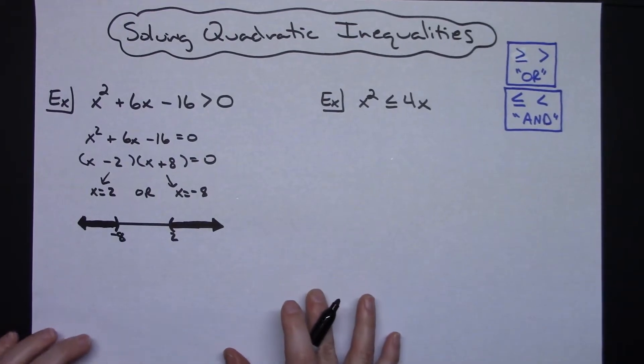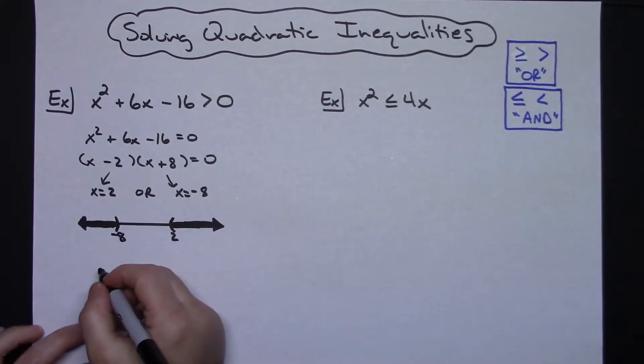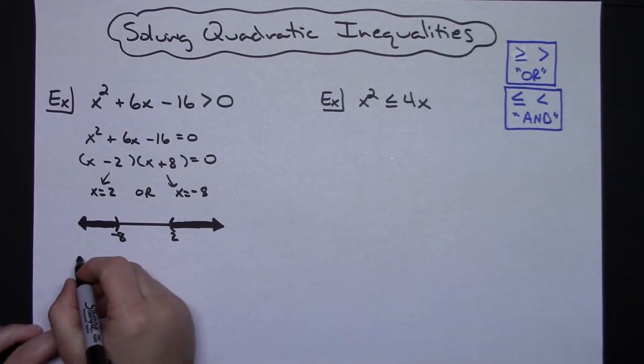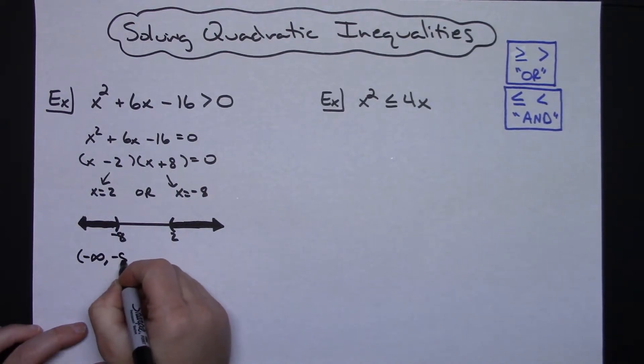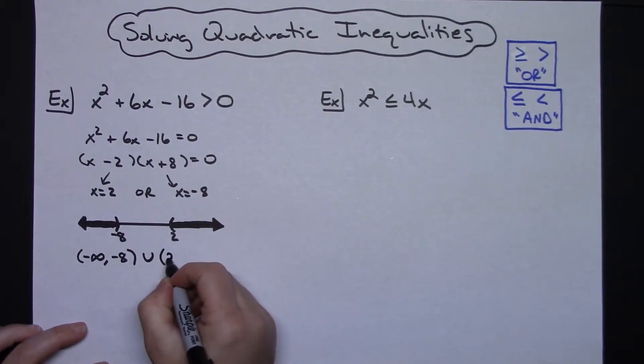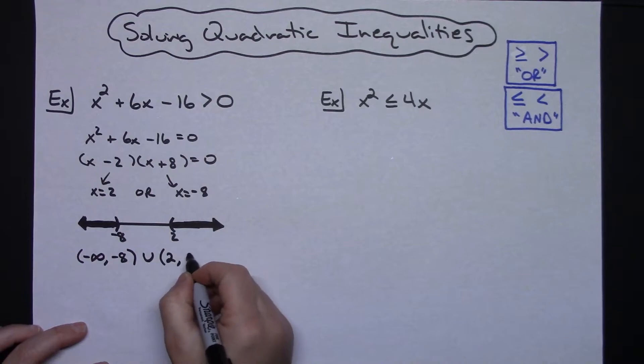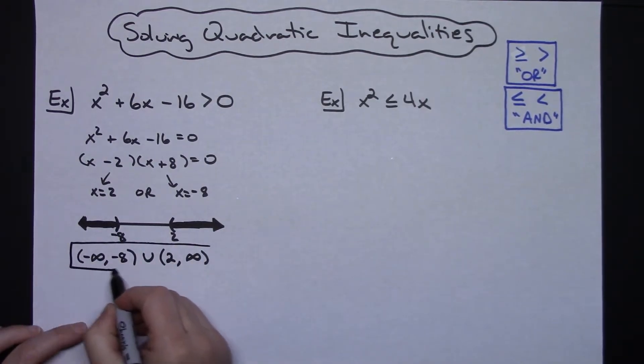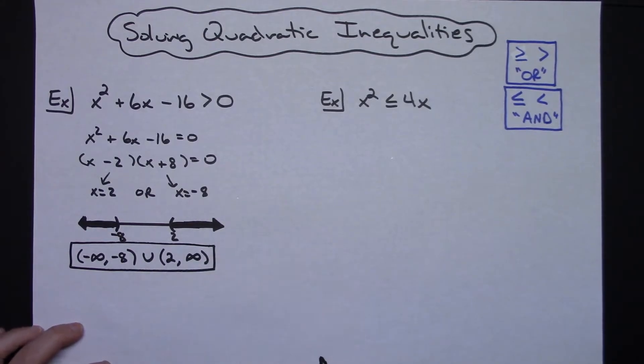Now if we take that and we look at it in terms of interval notation, our solutions would come from negative infinity all the way up to negative 8, not including the negative 8. And then it would skip over and start at the 2, not including the 2, and then go all the way to infinity. So there's our solution in interval notation: (-∞, -8) ∪ (2, ∞).